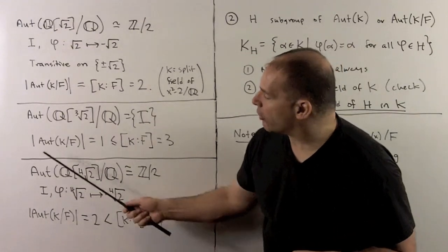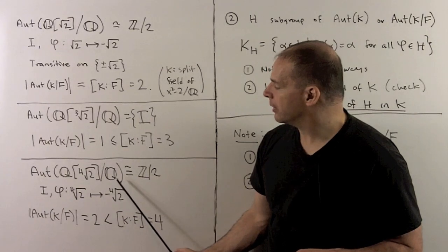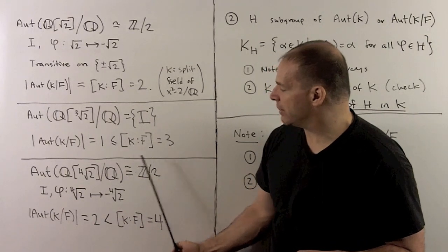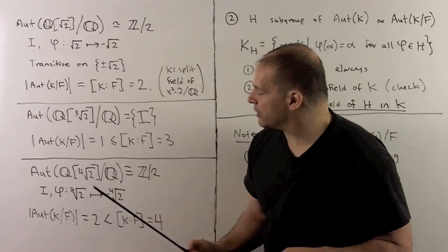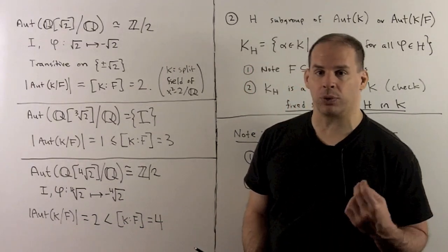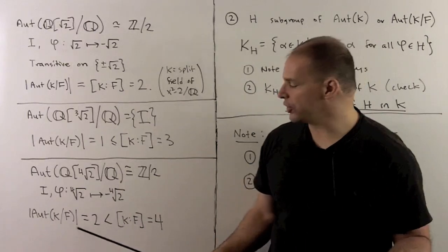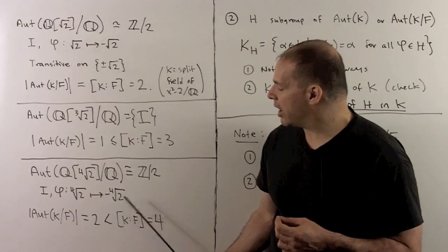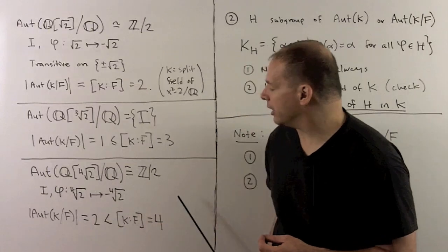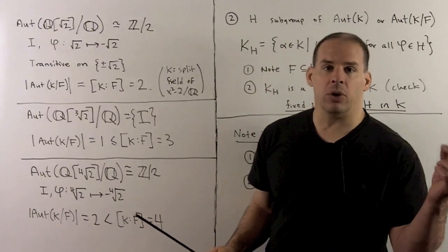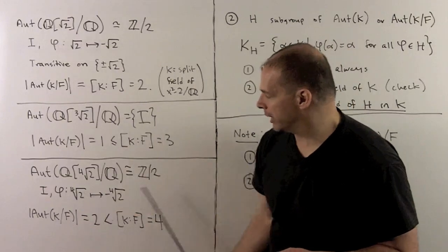Finally, consider the automorphisms of Q adjoined ⁴√2, fixing the rationals. Again, we have isomorphic to Z mod 2, with elements the identity and the automorphism carrying ⁴√2 to −⁴√2. Here the order of the group is 2, the degree of K over F is 4, and again we have strict inequality. Something to note: in these cases with strict inequality, we're not working with splitting fields.